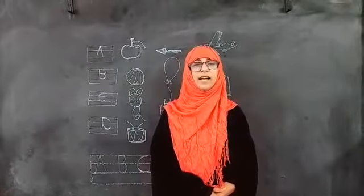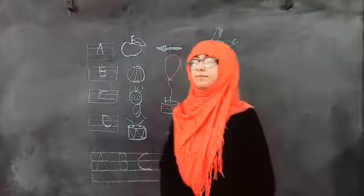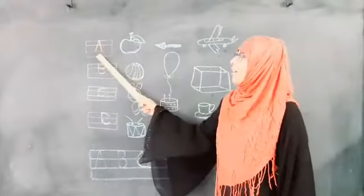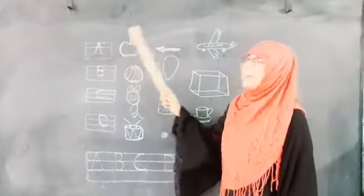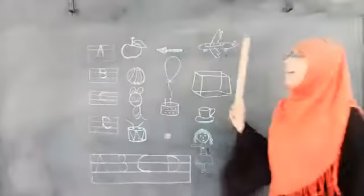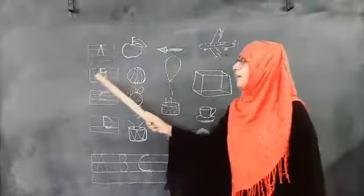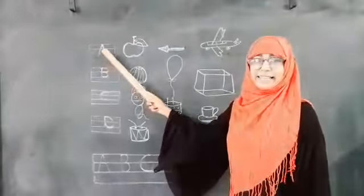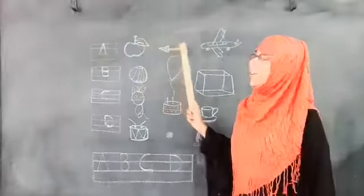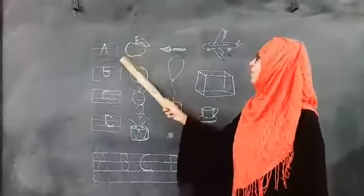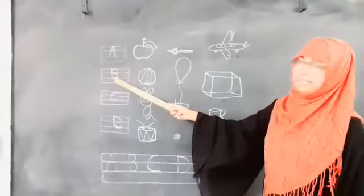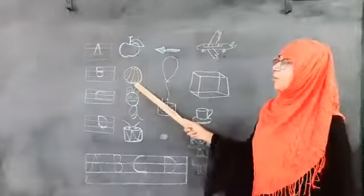Today we are going to deliver alphabets A to D. A for apple, A for arrow, A for airplane. Say now again, A for apple, A for arrow, A for airplane.